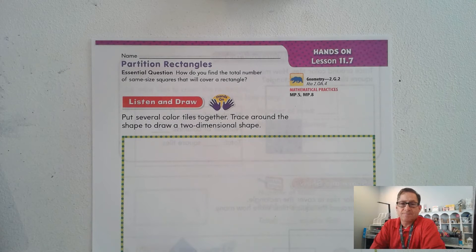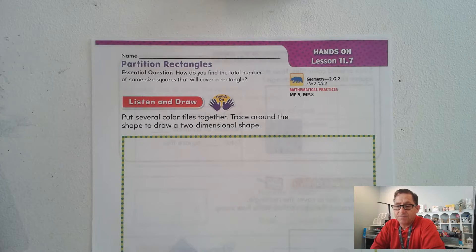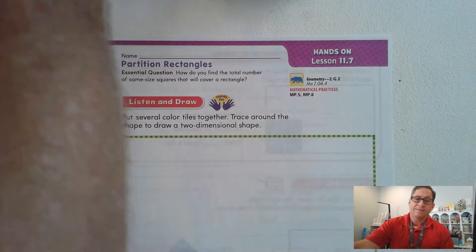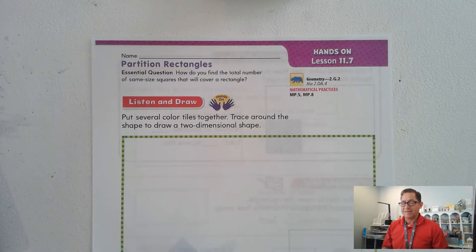Ready? In today's lesson, lesson 11.7, we're on page 545 of the 2nd Grade GoMath textbook. And our lesson today is titled Partition Rectangle. And basically we're trying to find how many same size squares will cover a rectangle.